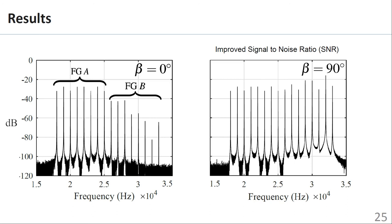These plots show the received frequency spectrum of the magnetic sensor for beta equal to 0 and 90 degrees respectively.